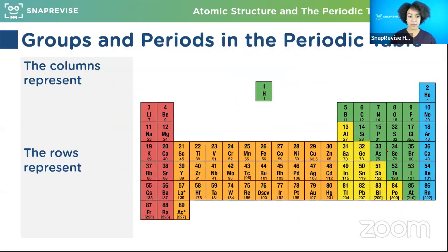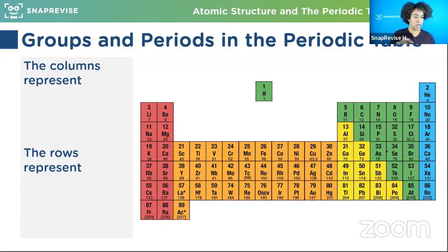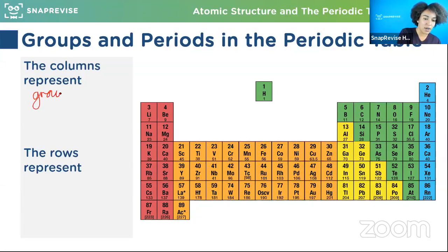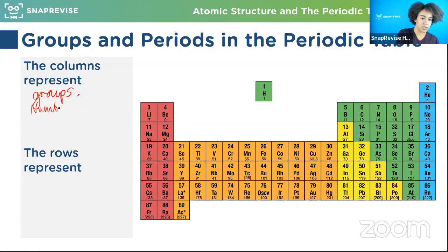We're going to have a quick look at the periodic table to make sure you guys remember how it works. Can someone tell me what the columns mean - the bits that go up and down? Groups - yes, excellent. The groups represent the number of electrons in the outer shell, and that's super important because that tells you all about reactivity, which we'll be learning later on in the year.